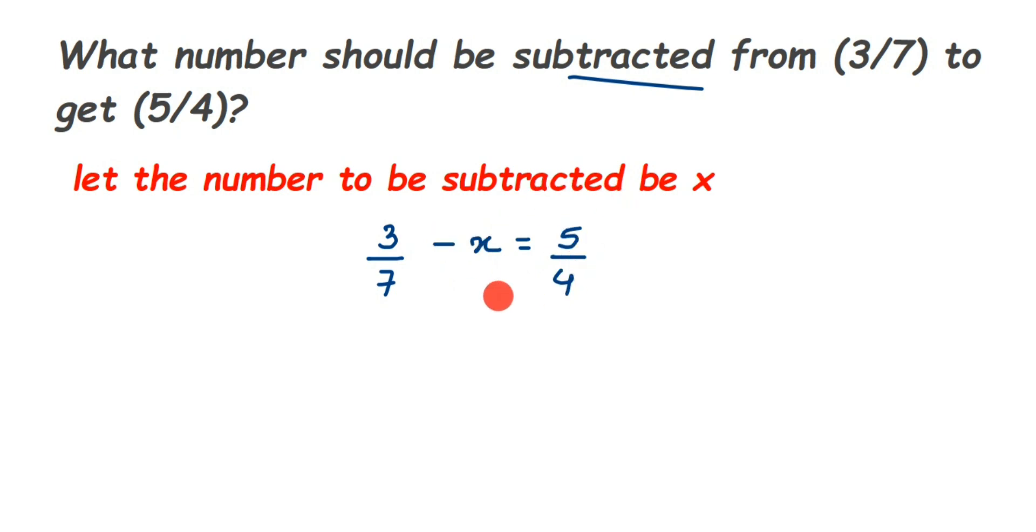So I'm going to transpose minus x to the right side and bring 5/4 to the left side. With the transpose method, the signs will change. 5/4 is positive, when transposed will be negative, so minus 5/4 we'll get. Transpose minus x to the other side, the sign will change, minus will become plus, so it will be x or plus x or just x.